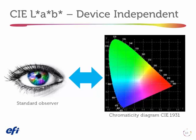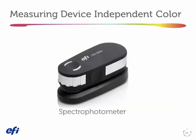So how do we bring device independent color into our workflow? The answer is this is why we need a spectrophotometer. Unlike your densitometer in the press room that simply reports density, the spectrophotometer basically reports an invariant description of the color, which I can convert mathematically into LAB or some other device independent color space.